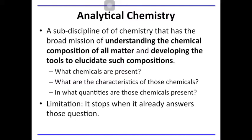Analytical chemistry is concerned about two things: understanding the chemical composition of all matter, and developing the tools to elucidate such compositions. It answers the following questions. First, what chemicals are present? Second, what are the characteristics of those chemicals? And third, in what quantities are those chemicals present? It is not concerned about anything else. It only stops when it already answers those questions. It is up to the scientist to interpret the data that analytical chemistry obtains, and up to the government to utilize those data and implement policies in accordance to those data.